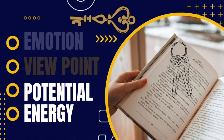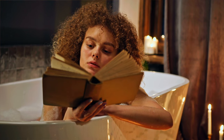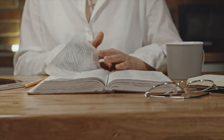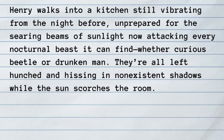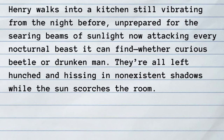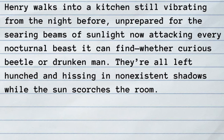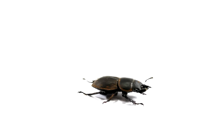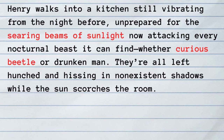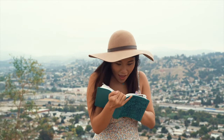Another way to add life to your description is by focusing on potential energy. The setting and description in your scenes don't have to be static — they should be an active participant in the story. Readers should recognize that description in your novel isn't something to skim; it's a necessary piece of the story that would leave the narrative incomplete if removed. For example: Henry walks into the kitchen, still vibrating from the night before, unprepared for the searing beams of sunlight now attacking every nocturnal beast it can find, whether curious beetle or drunken man. They're all left hunched and hissing in non-existent shadows while the sun scorches the room. The description in this scene is more active than the character himself — every item has an agenda. This is a scene filled with potential energy. I hope these examples help you imagine what description can be, rather than the simple listicle style many new writers rely on.